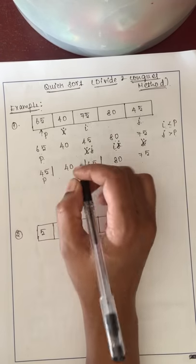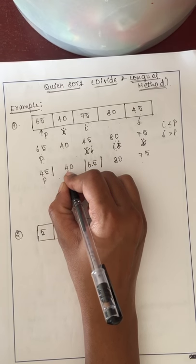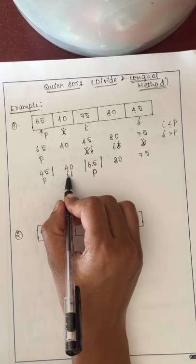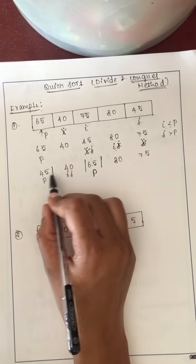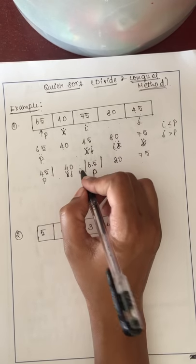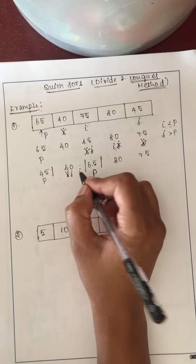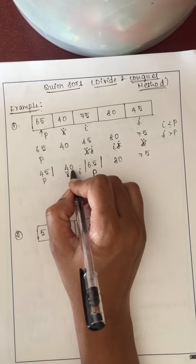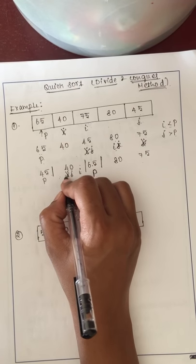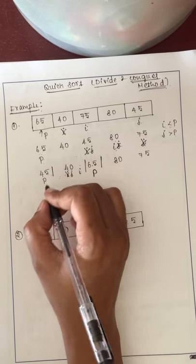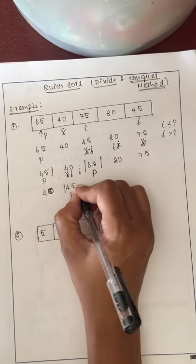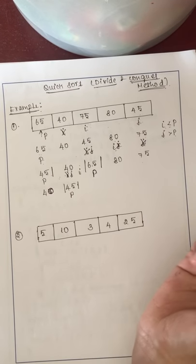In the left sub-array, this element becomes the pivot with only one more element remaining, so both i and j point to 40. Comparing pivot (45) and i (40): i is lesser so we increment i, but there is no more element. We come to j: j must be greater but it is lesser, so we cannot decrement j. We directly swap j with the pivot element, so 40 and 45 swap positions. The pivot element always moves to the correct place.